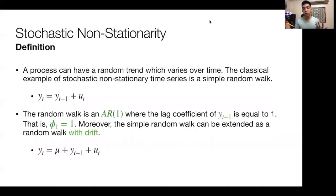Now, let's get on to what stochastic non-stationarity is. A process can have what we refer to as a random trend. So it can have this random trend, and that random trend varies over time. The classical example of this would be a simple non-stationary time series, which is stochastic, is a simple random walk model.